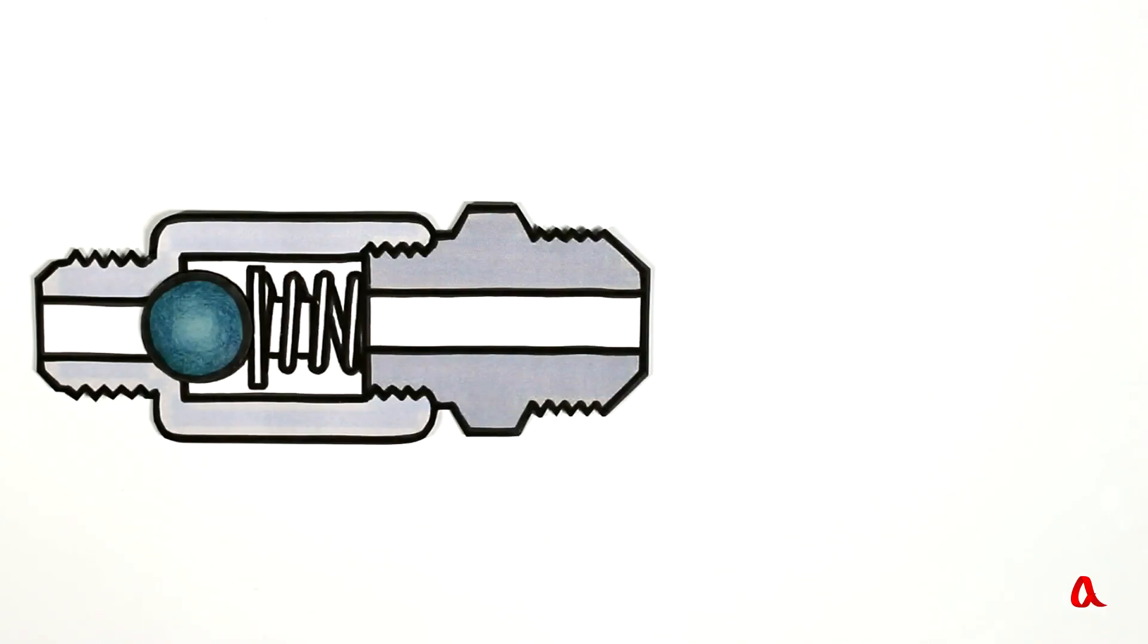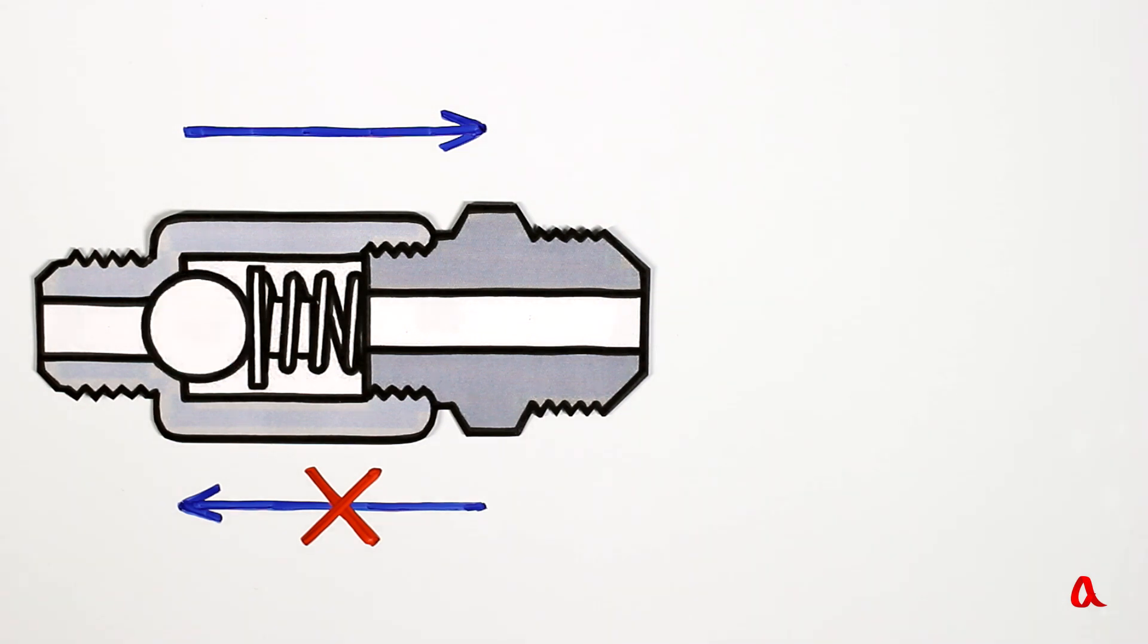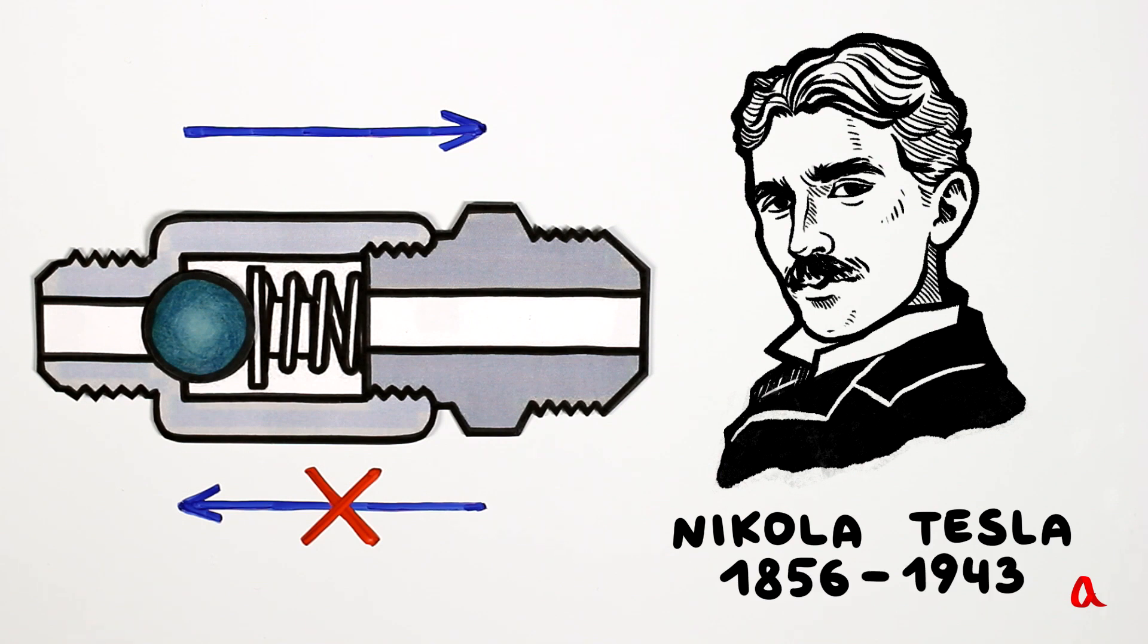A hydraulic valve is a mechanism which easily lets a liquid or gas through in one direction, but hardly so in the opposite one. Regular valves contain moving parts. But in 1916, Nikola Tesla invented and patented a valve that has no moving parts in it.